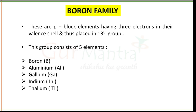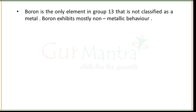Now let's begin the boron family, group number 13. These are the p-block elements having three electrons in their valence shell and are thus placed in the thirteenth group. This group consists of five elements: boron, aluminium, gallium, indium, and thallium. Boron is the only element in group 13 that is not classified as a metal — it exhibits mostly non-metallic behavior.